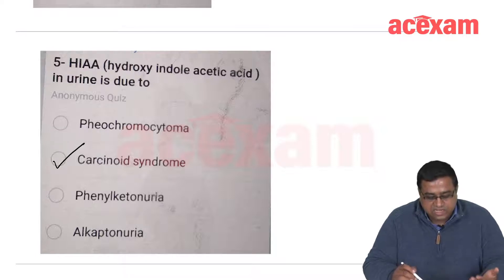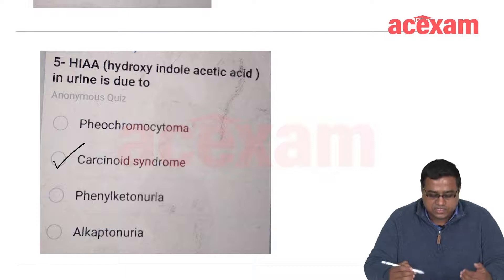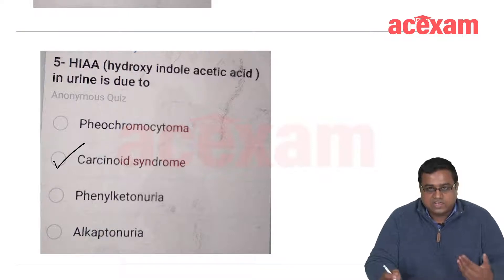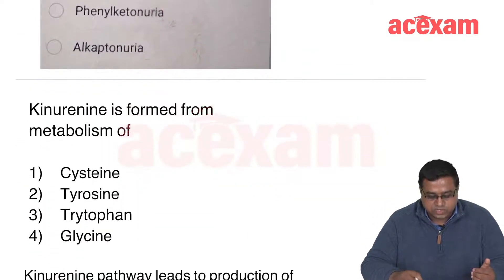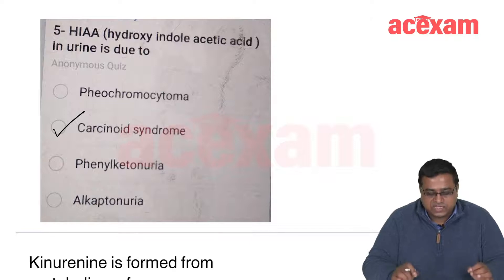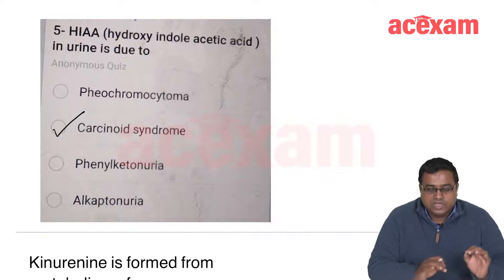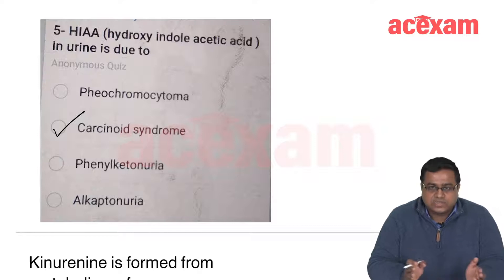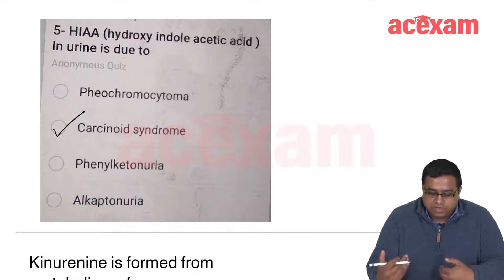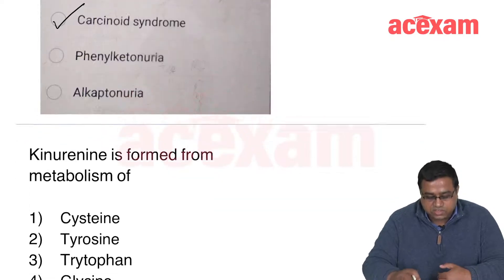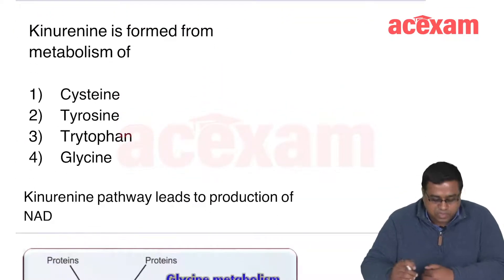The question can easily be changed — for example, 'homogentisic acid in urine is seen in?' and the answer would be alkaptonuria. The course at ASXA is designed so that you will be able to grasp these high-yield facts and have an edge over others.